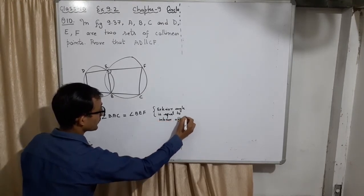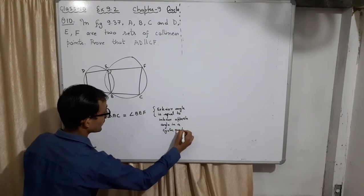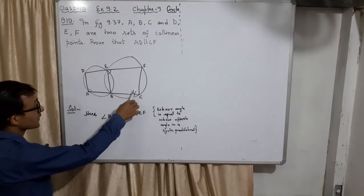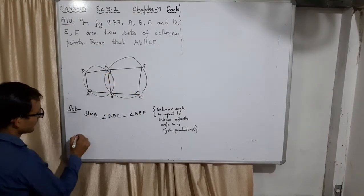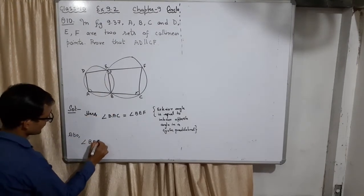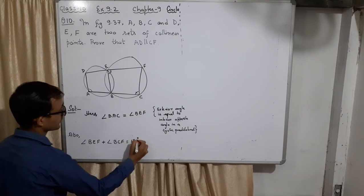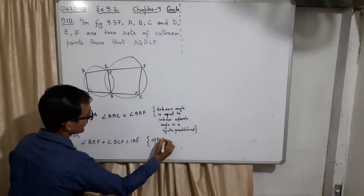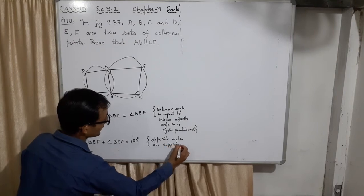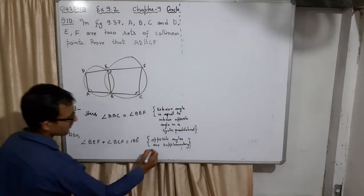This is the interior. Okay, now also these two angles are supplementary. Also angle BEF plus angle BCF equals 180 degrees in a cyclic quadrilateral. This is a cyclic quadrilateral. Here in this case it was this one is supplementary.